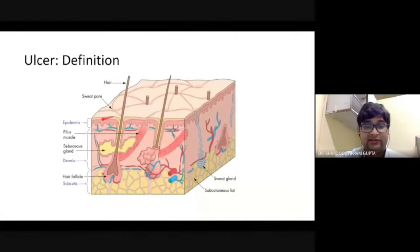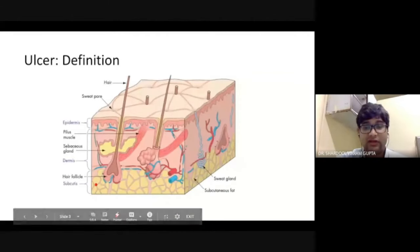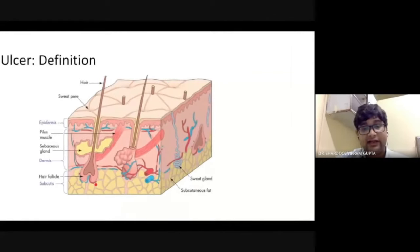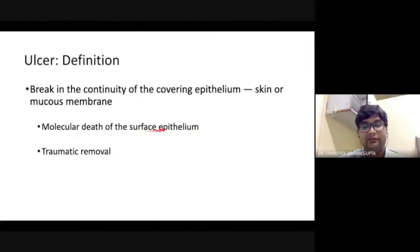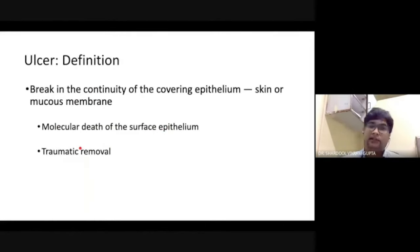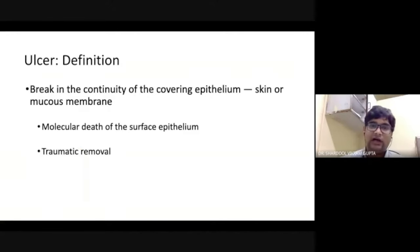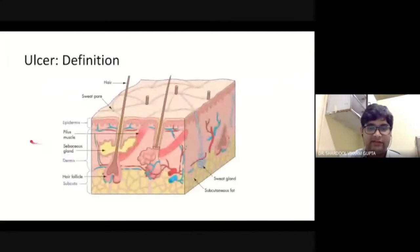What is an ulcer? This is the epidermis, this is the dermis, and this is the subcutaneous tissue. The ulcer is defined as a break in the continuity of the covering epithelium — skin or mucous membrane — which has occurred either due to molecular death of the surface epithelium or by traumatic removal. Either the trauma removes the outer surface, or due to some pathology the outer layer dies and there is ulcer formation.